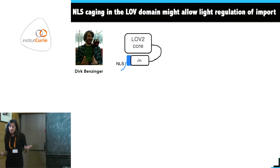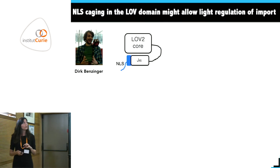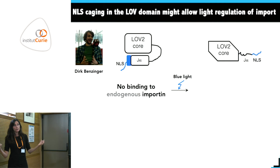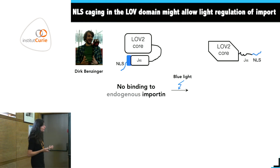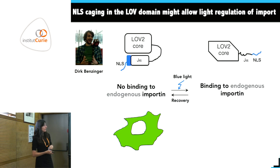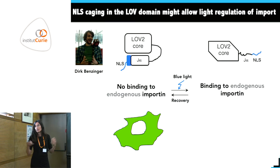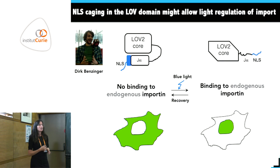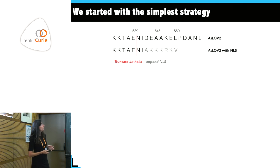The idea was that in the dark state the NLS is photocaged by the LOV domain, so there is no binding to the endogenous import machinery. When blue light is given, the helix unfolds, the NLS is exposed, and the import machinery can bind it. The system is reversible because in the dark the LOV domain closes again. With a fluorescent protein attached, the protein should be cytoplasmic in the dark and nuclear in the lit state — in practice it's not completely binary but somewhere in between.